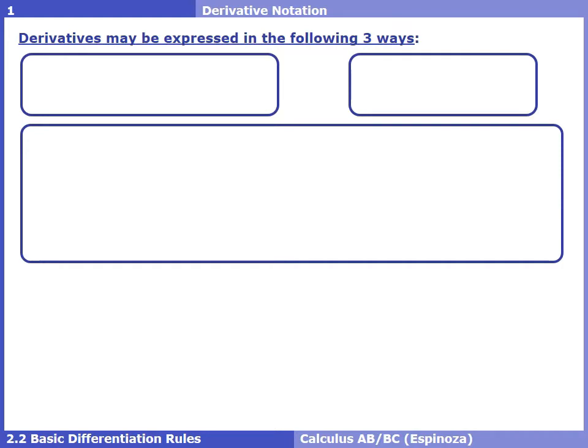The first thing we need to go over is a really big topic that usually throws off a lot of students, and that's the notation we use when we're talking about derivatives. It would be nice if there was just one way to do it, but there are several ways. The first you already know from 2.1: f prime of x. If you ever see f prime of x, you should know we're talking about a derivative, or slope.